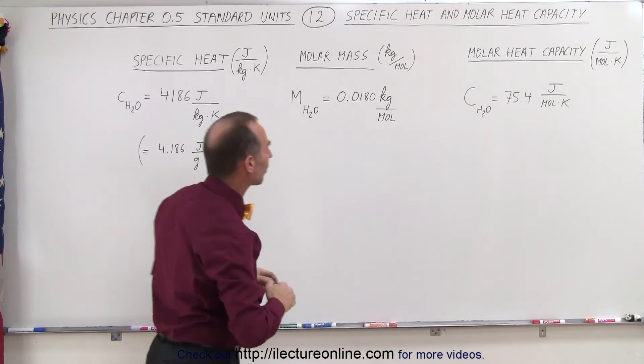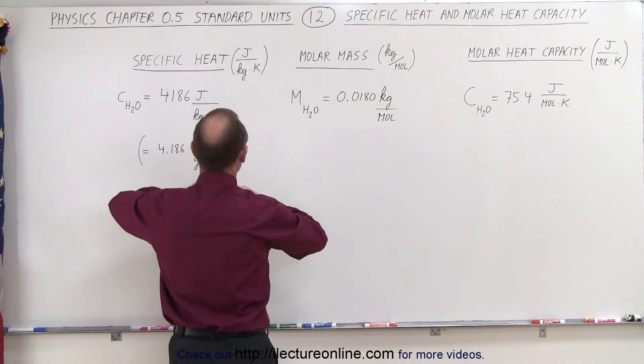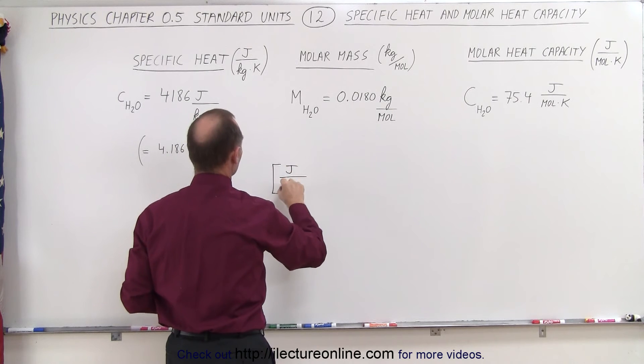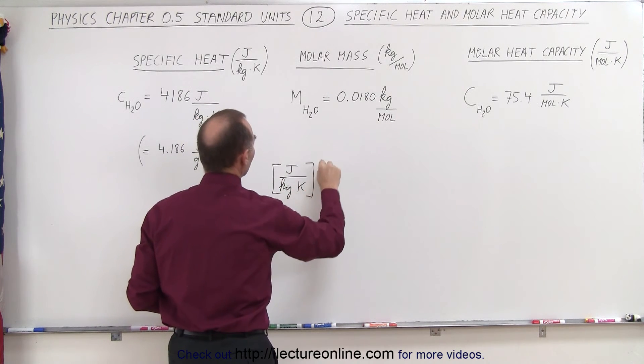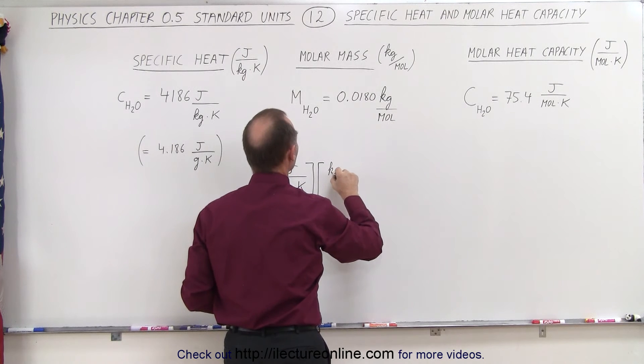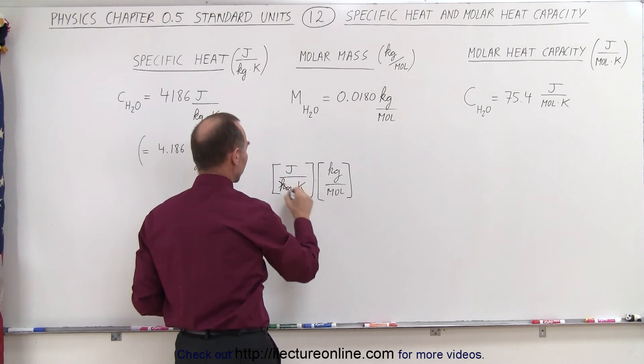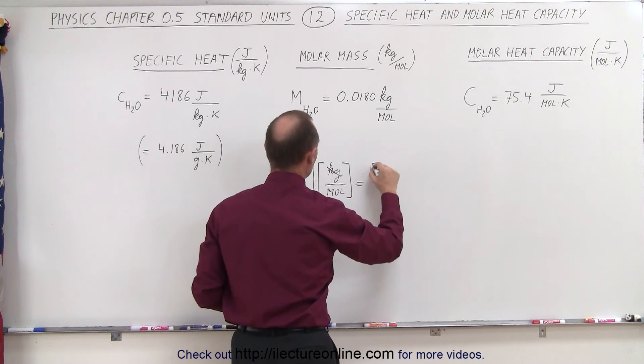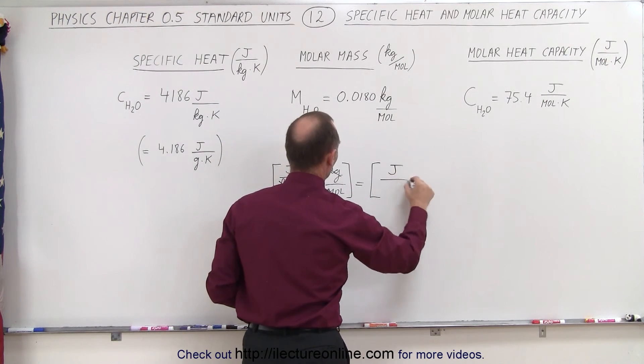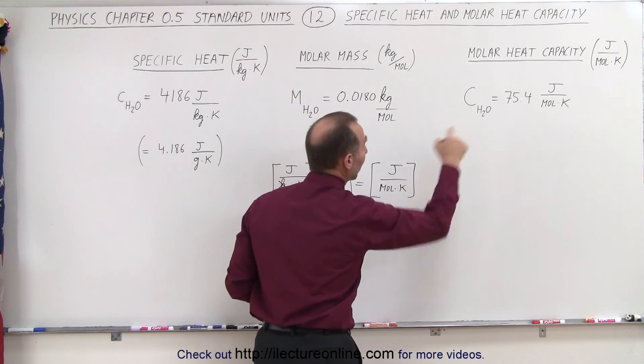Let's see if the units work out. So here we had units of joules per kilogram times kelvin, and if we multiply that times the units of molar mass, which is kilograms per mole, notice that when we multiply, the kilograms cancel out, and we end up with units of joules per mole times kelvin, and that's indeed what we had over there.